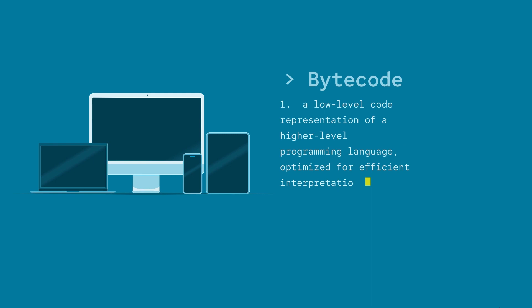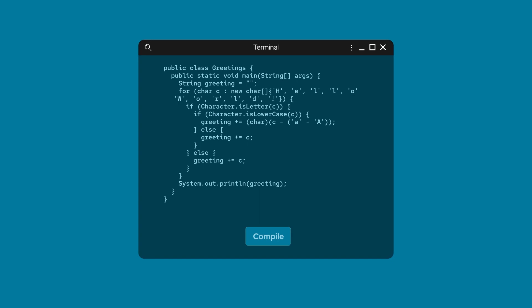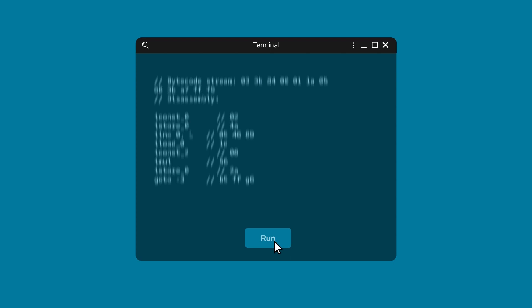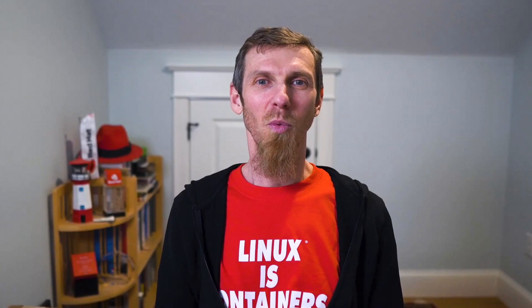Bytecode is effectively a low-level translation of code generated by higher-level programming languages like Java, Python, or C++. The benefit of bytecode is that it can operate on any machine that has the right interpreter, which means the same code can run on different types of devices and operating systems. One of the main goals of WebAssembly is to provide a common target platform for code written in various programming languages, such as Rust and JavaScript, letting developers write code in the language best suited for their problem and have it run on the web with the performance and compatibility of native code.